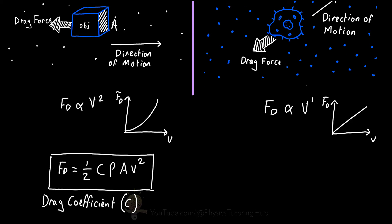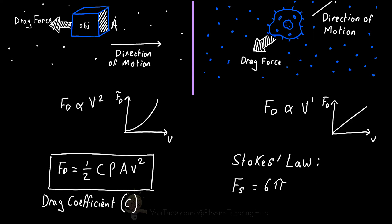For very small objects moving through a denser medium, we need to use a formula called Stokes' Law. Stokes' Law states that the drag force is equal to six pi multiplied by the viscosity of the fluid, multiplied by the radius of the object, multiplied by its velocity. So the more viscous the fluid, the larger the drag force. And the larger the velocity and size of the object, the greater the drag force will be.